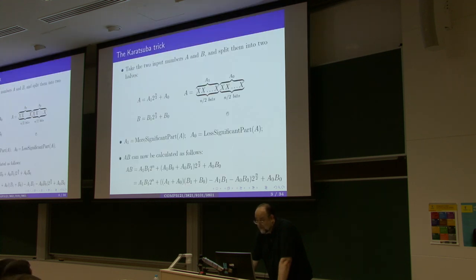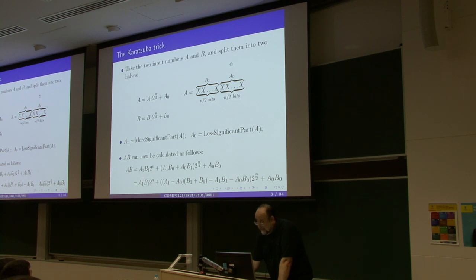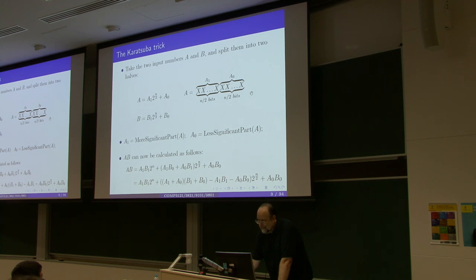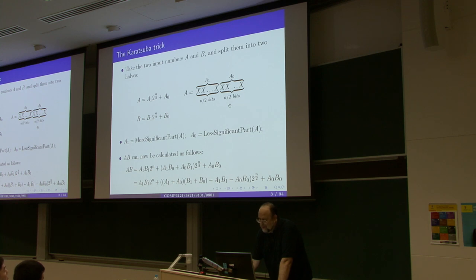If you break a binary number into two halves by splitting the digits, those corresponding to the higher powers of 2 form the more significant part, and those corresponding to the lower powers of 2 form the less significant part — just the left-hand side and right-hand side. For simplicity, let's assume these are all binary numbers.